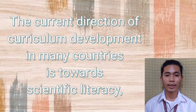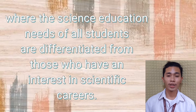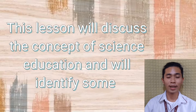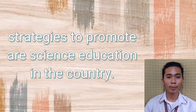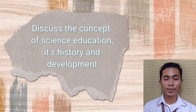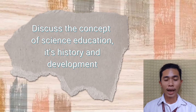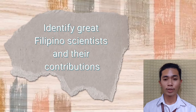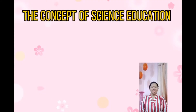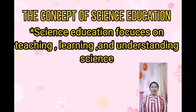The current direction of curriculum development in many countries is towards scientific literacy, where the science education of all students is differentiated from those who have interest in scientific careers. This lesson will discuss the concept of science education and identify strategies to promote science education in the country. Learning objectives: at the end of this lesson, the student should be able to discuss the concept of science, its history and development, identify great Filipino scientists and their contributions, and identify science schools established in the Philippines.